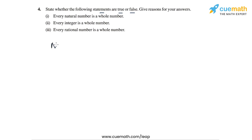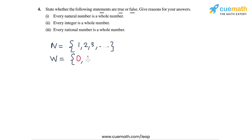The set of natural numbers is the set {1, 2, 3, ...} and so on. The set of whole numbers is all these numbers combined with the element 0, so 0 is the only additional element in the set of whole numbers compared to the set of natural numbers. So the set of whole numbers is {0, 1, 2, 3, ...}. Clearly, every natural number also occurs in the set of whole numbers.